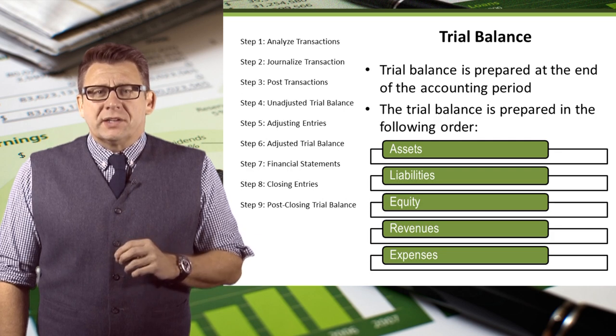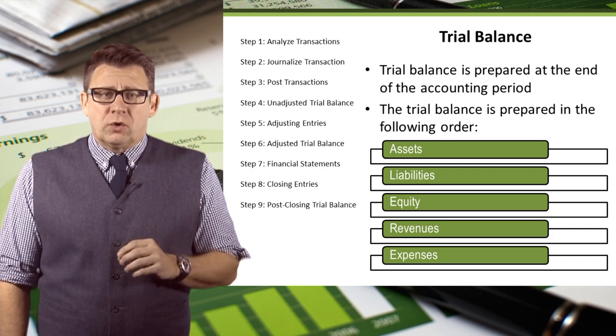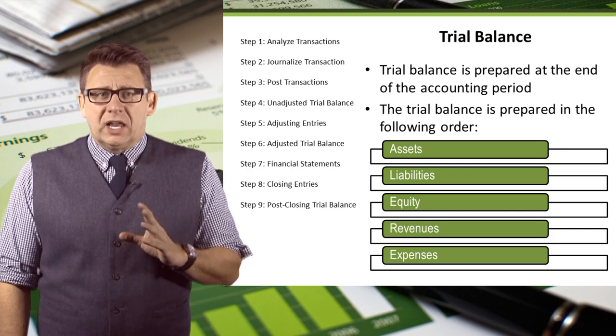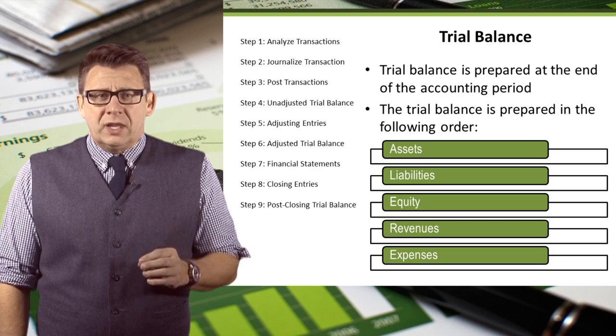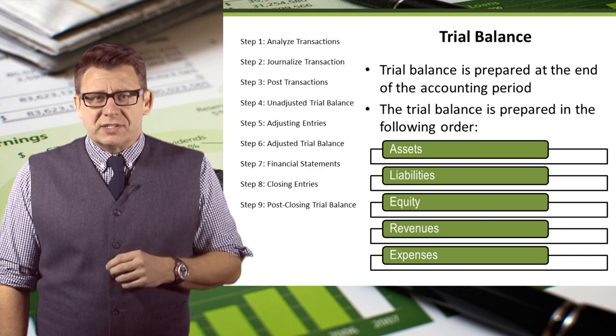The trial balance lists accounts in the following order: assets, liabilities, equity, revenues, and expenses.